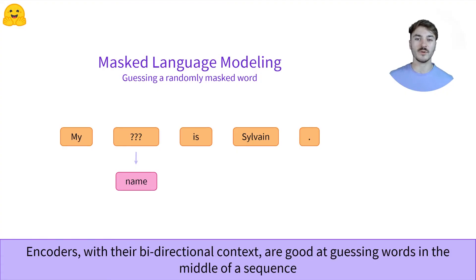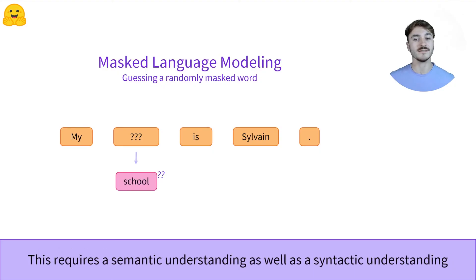Encoders shine in this scenario in particular, as bidirectional information is crucial here. If we didn't have the words on the right, is, Sylvain, and the dot, then there is very little chance that BERT would have been able to identify name as the correct word. The encoder needs to have a good understanding of the sequence in order to predict a masked word, as even if the text is grammatically correct, it does not necessarily make sense in the context of the sequence.